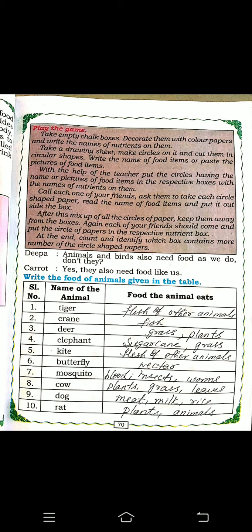Write the food of the animals in the table. Tiger eats the flesh of other animals. Crane eats fish. Deer eats grass and plants. Elephant eats sugar cane and grass. Kite, which is a bird, eats the flesh of other animals.